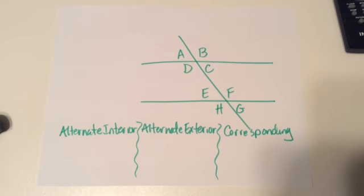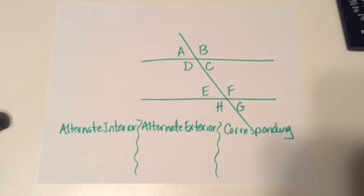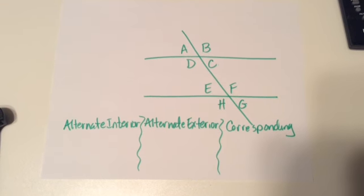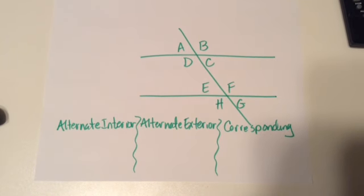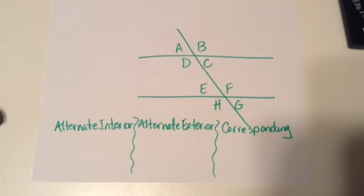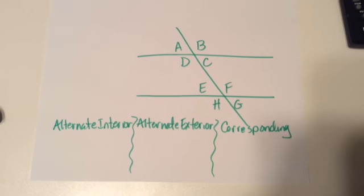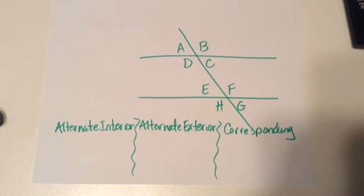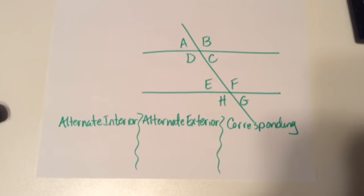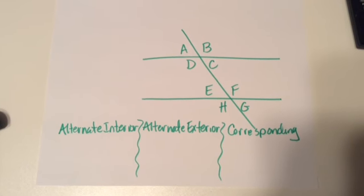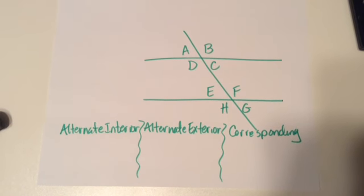For your practice problems, look at this set of parallel lines with a transversal and list under the three categories which angles fall into those categories — which angles are alternate interior angles, which are alternate exterior angles, and which are corresponding angles. Once you've done that, please take a picture of it and turn it in using the turn-it-in feature in Edmodo, attached to the assignment where you found the video.